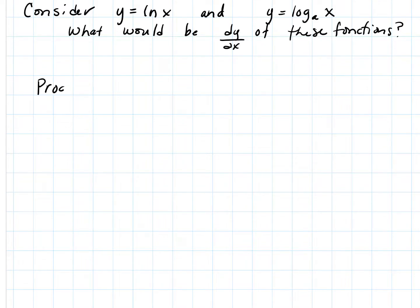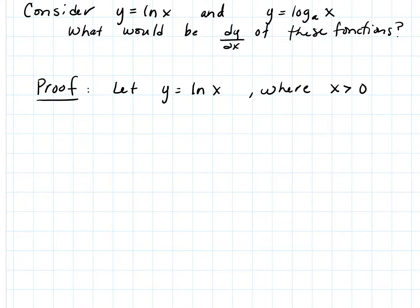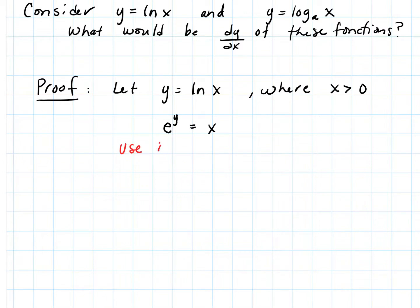Let y equal the natural log of x, where x is greater than zero — we can't take the natural log of x unless x is positive. Then e to the y has to be equal to x, by properties of logarithms and exponentials and the inverse nature of those two functions. You could rewrite it by the definition of the logarithm, or you could just exponentiate both sides.